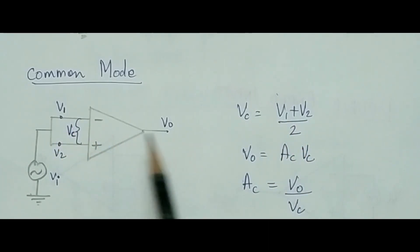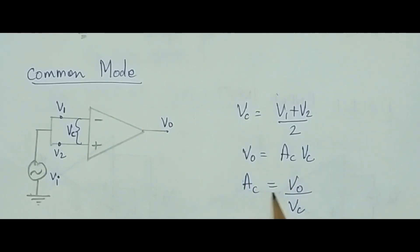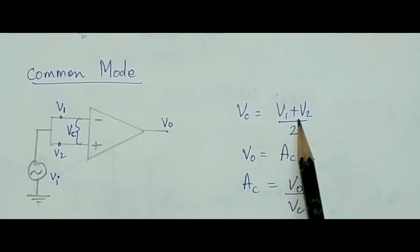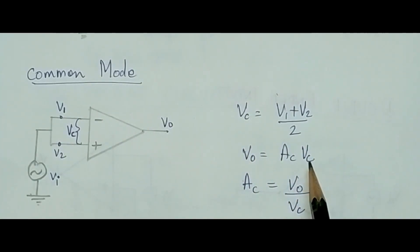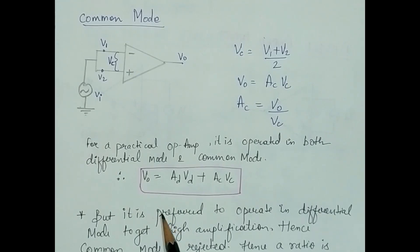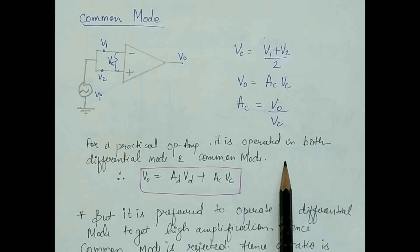What will be the gain in common mode? I have denoted this gain by AC. Gain is output voltage divided by input voltage, where input voltage is (V1 + V2)/2, so V0 equals AC multiplied by Vc. So there are two modes of operation. A practical op-amp operates in both common mode as well as differential mode.